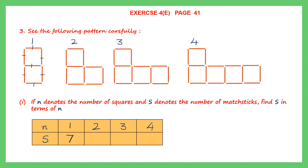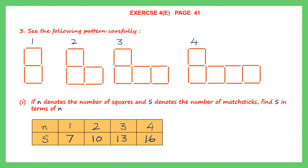In the second figure we count: 1 through 10 — we have 10 matchsticks. In the third figure we count up to 13. In the fourth figure we count: 1 through 16 — we have 16 matchsticks. So the table gives us: figure 1 has 7 matchsticks, figure 2 has 10, figure 3 has 13, and figure 4 has 16.